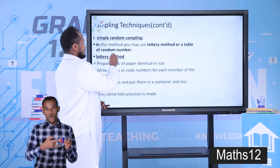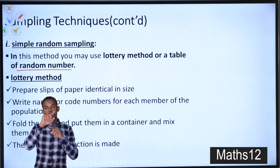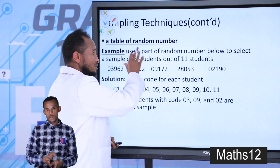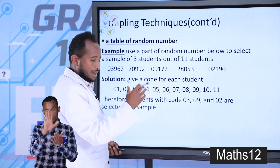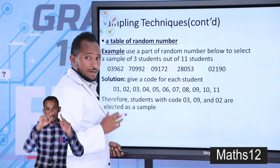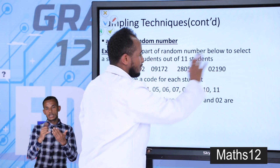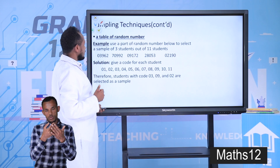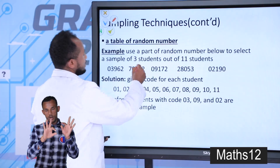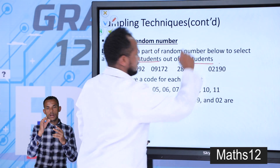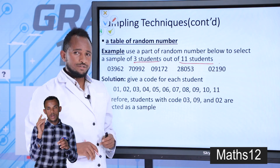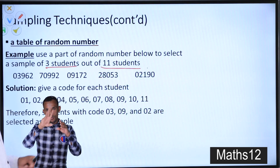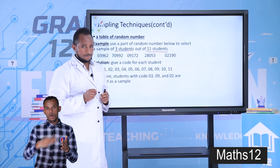The other way of applying simple random sampling is a table of random numbers. If you refer to your textbook, at the back there is a table of random numbers. I simply selected a certain part from that. Using this table, let's see how to select a sample. Using the part of the random number table below, try to select three student samples out of 11 students. To apply a table of random numbers, first you have to give a code or number for each member of the population — we have 11 students.